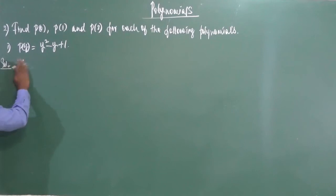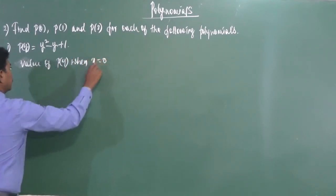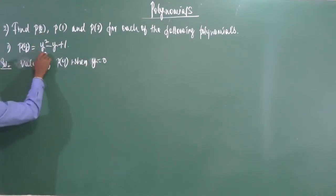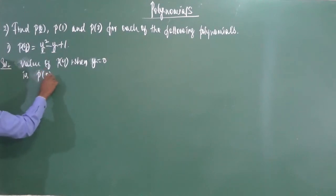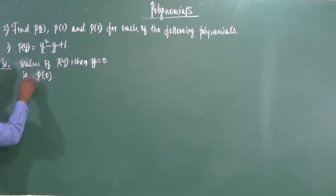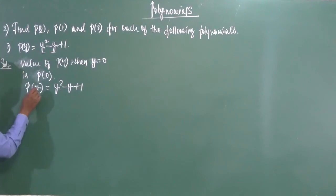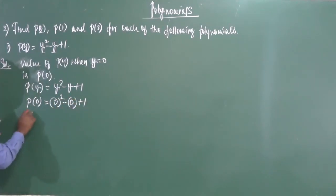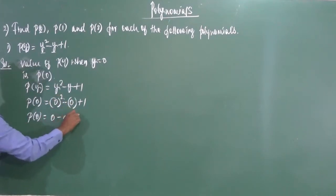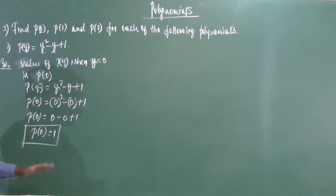Value of P of y when y equals 0 is P of 0. Write the polynomial: P of y equals y squared minus y plus 1. Replace y by 0: P of 0 equals 0 squared minus 0 plus 1, which equals 0 minus 0 plus 1. Therefore P of 0 is 1.